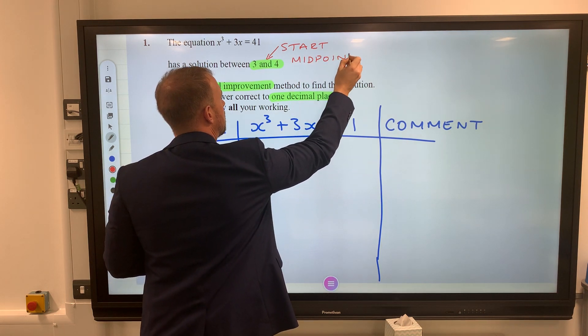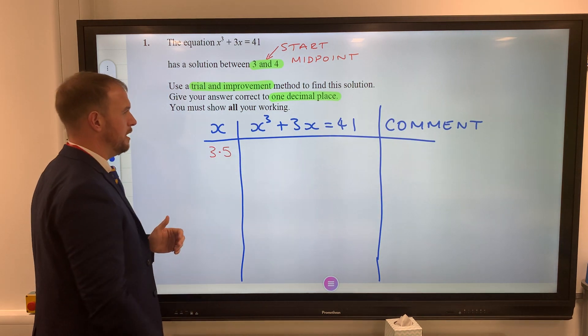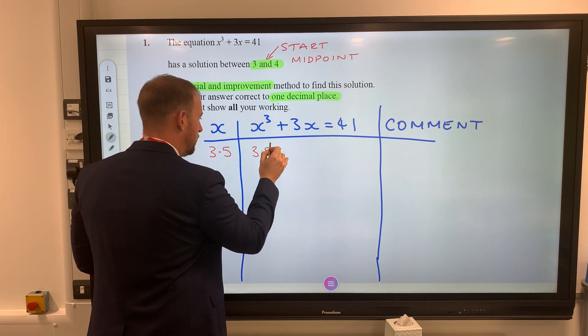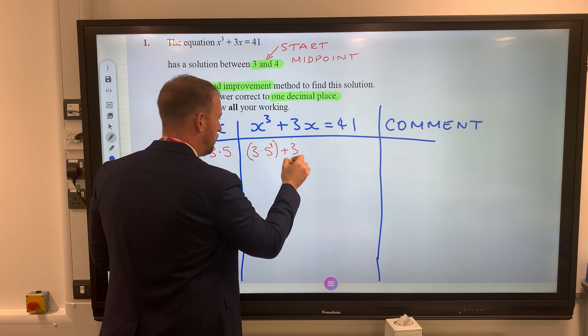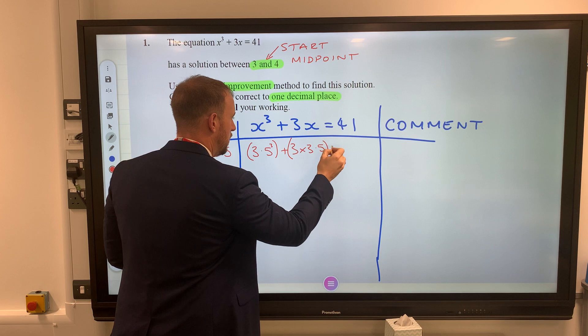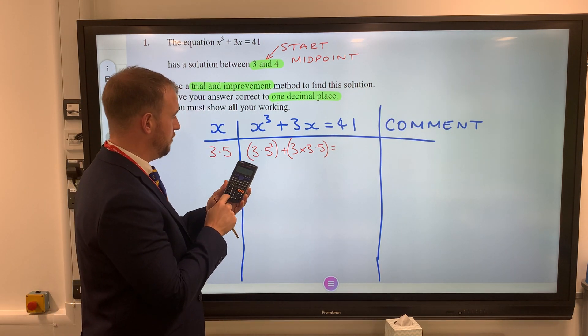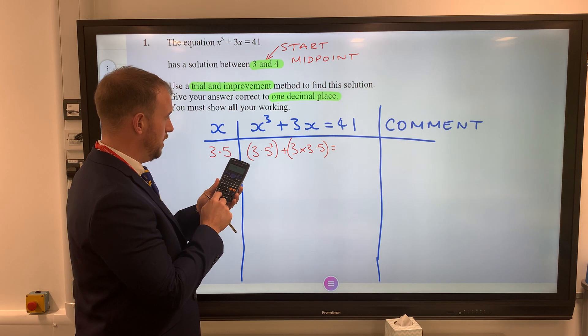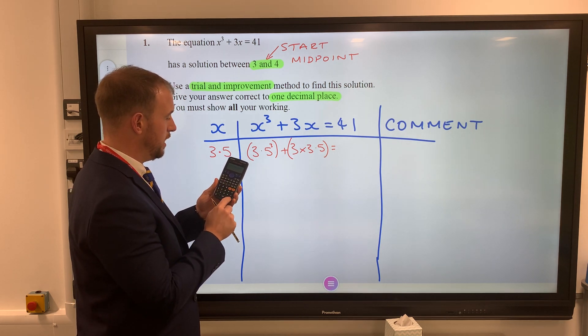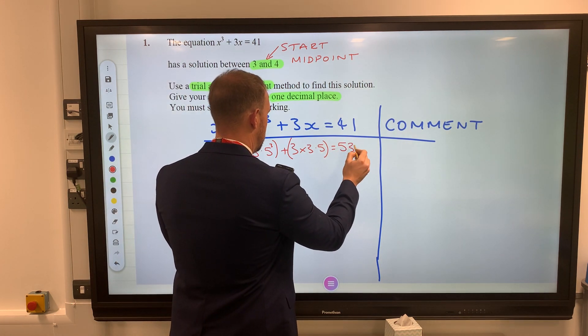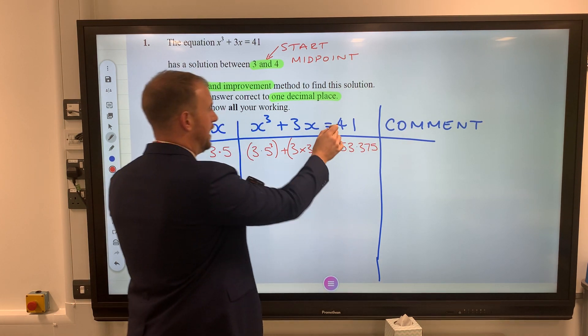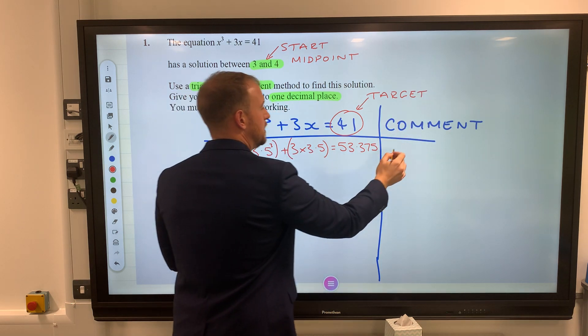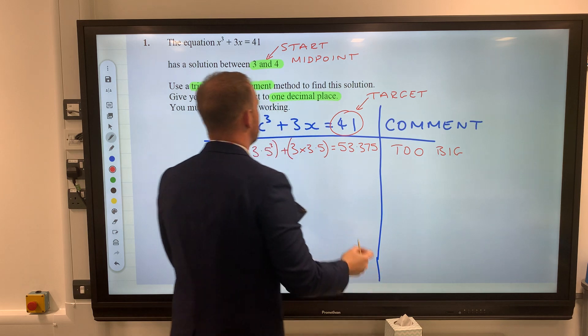If x is 3.5, we need to use some substitution: 3.5³ + 3 × 3.5. I'm going to pop that into my calculator - 3.5 cubed plus, and we use brackets here, 3 times 3.5, close bracket, equals 53.375. Now this is my target - I am aiming to get 41. You can clearly see this is too big, so I'm going to write there 'too big'.